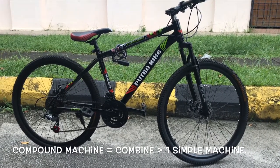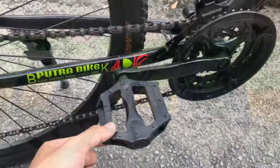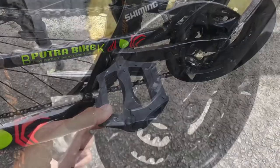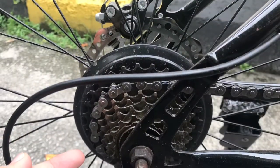Today we bring out one compound machine called a bicycle. The bicycle has three simple machines that work together which are the lever, wheel and axle, and the pulley.